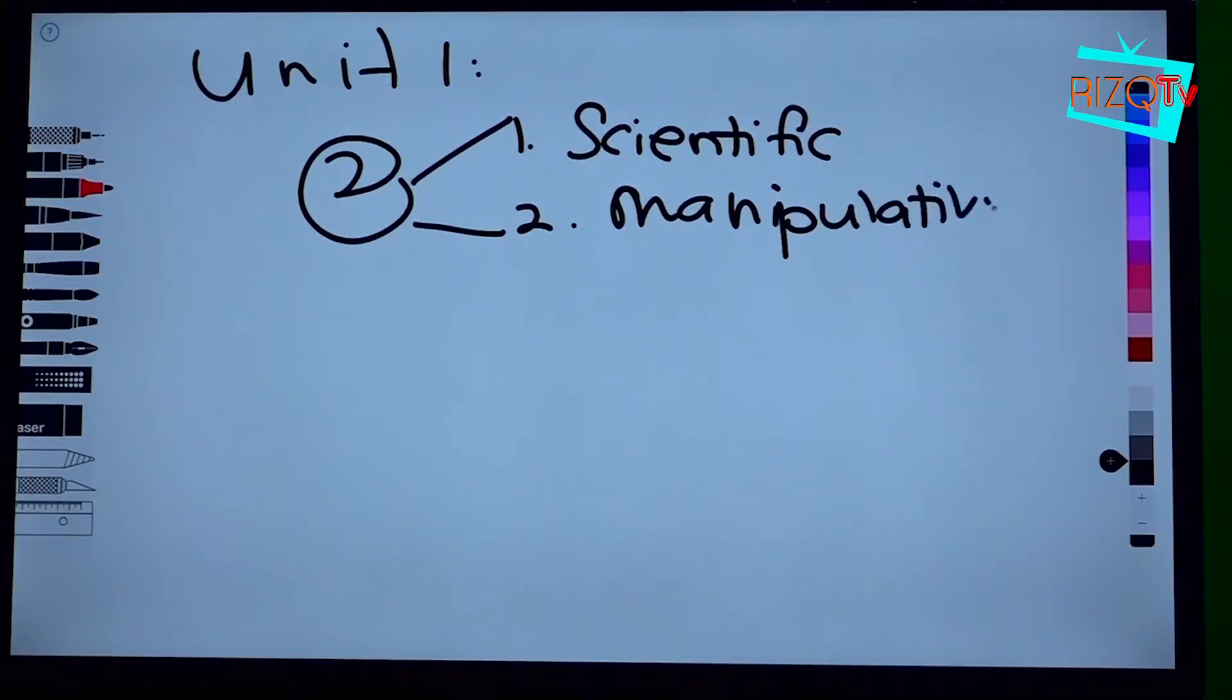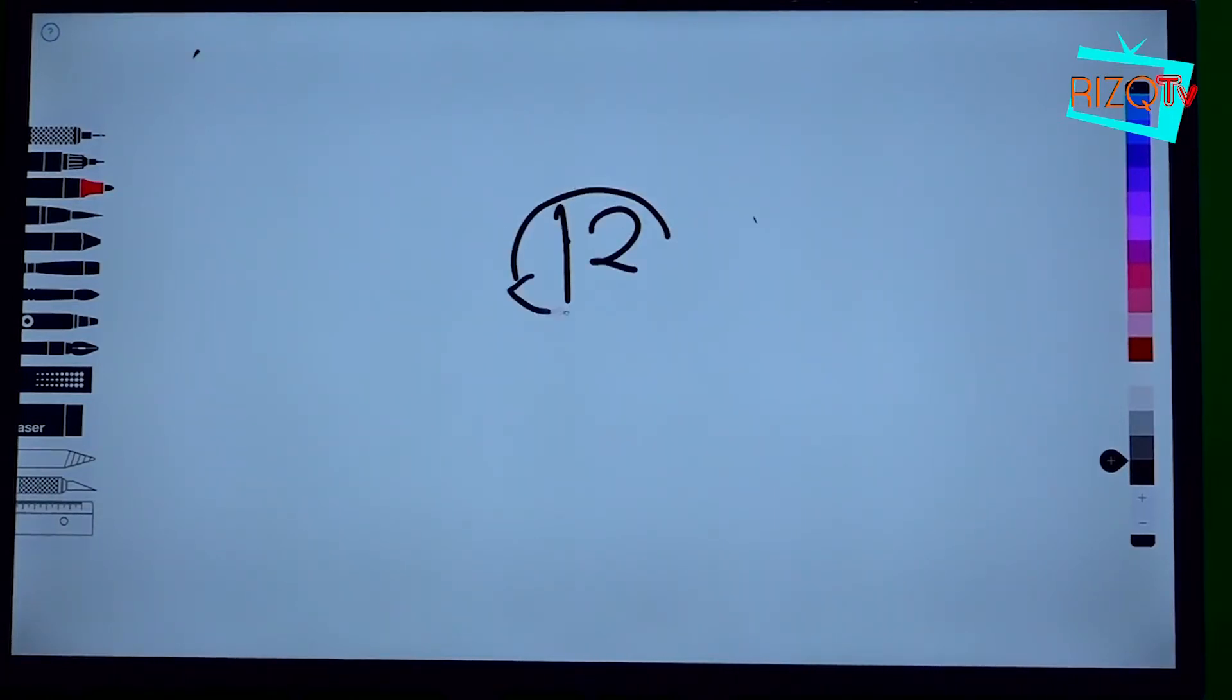In this scientific skills, make sure you understand well about the 12 skills as being stated. The first one, you need to know about observing. What is observing?